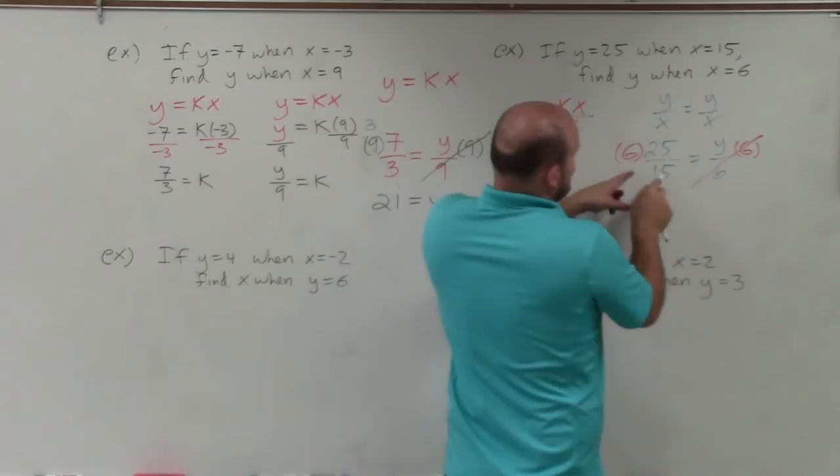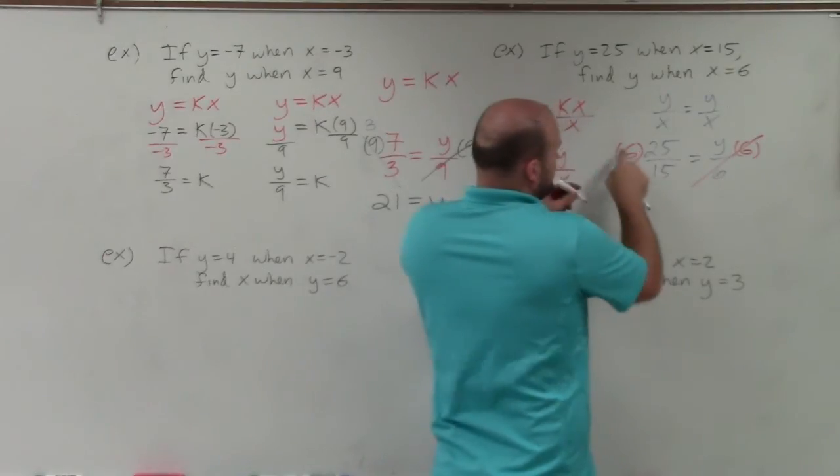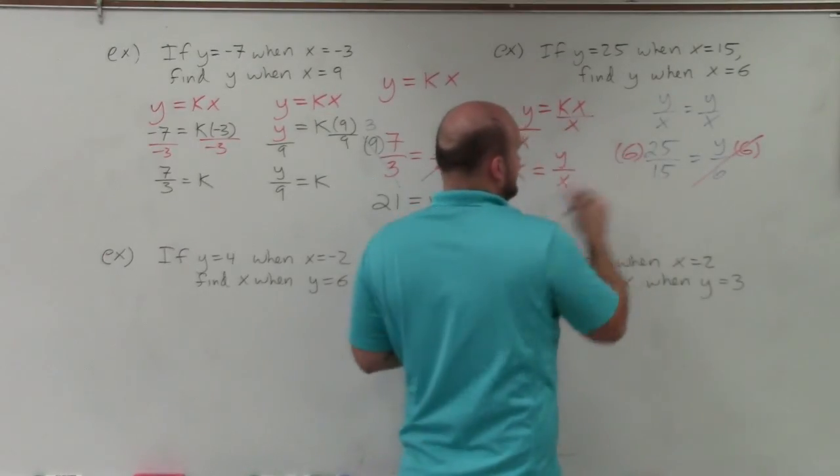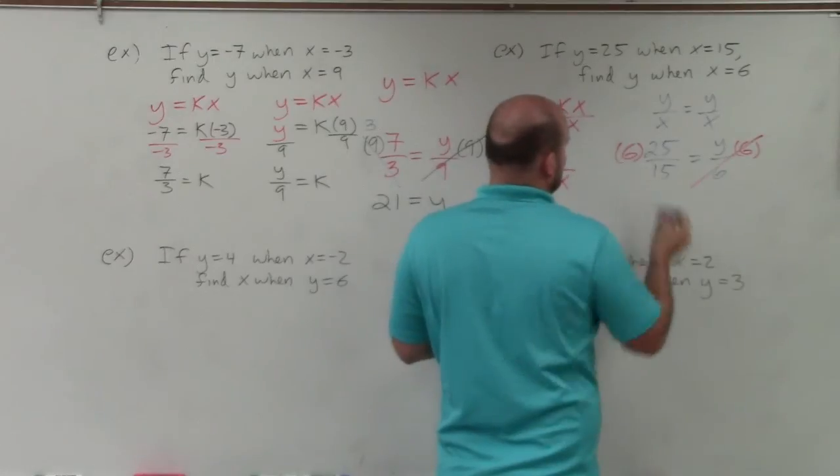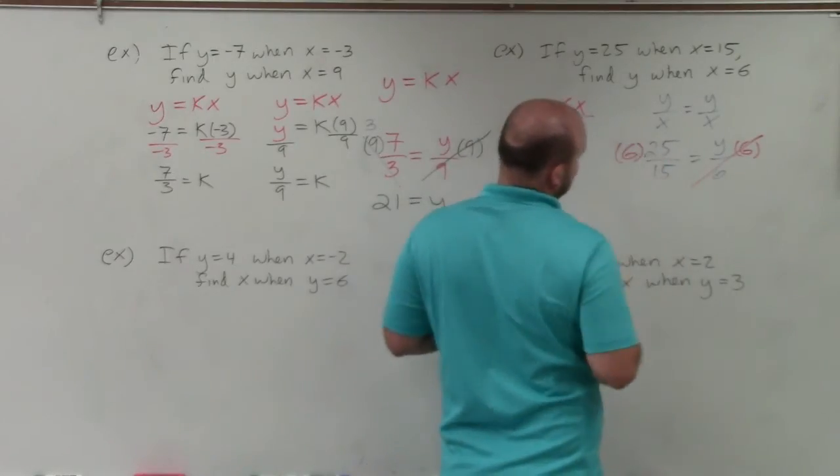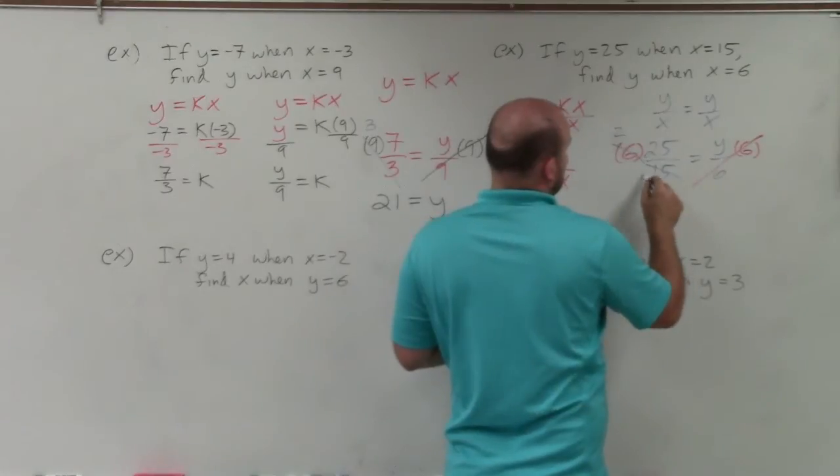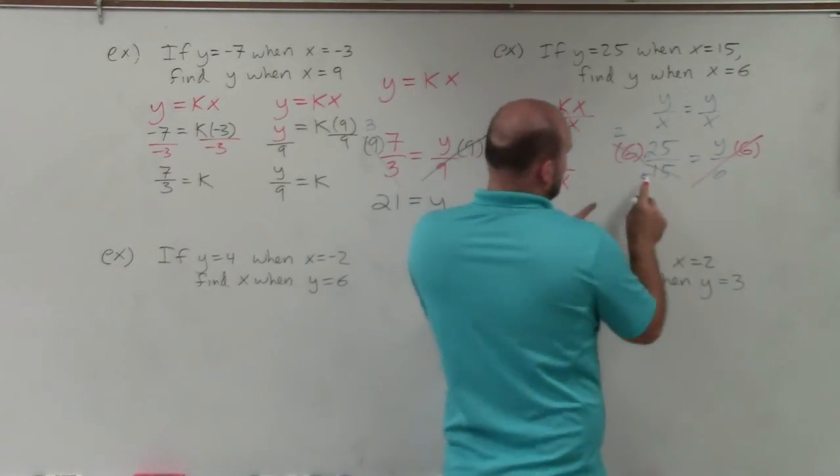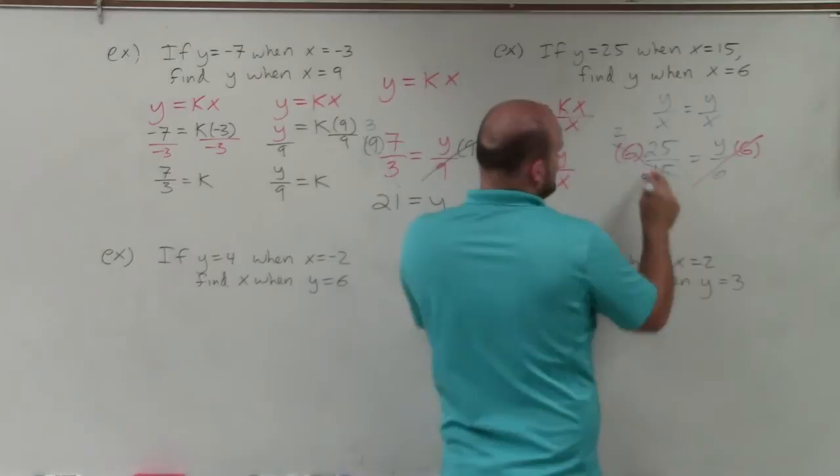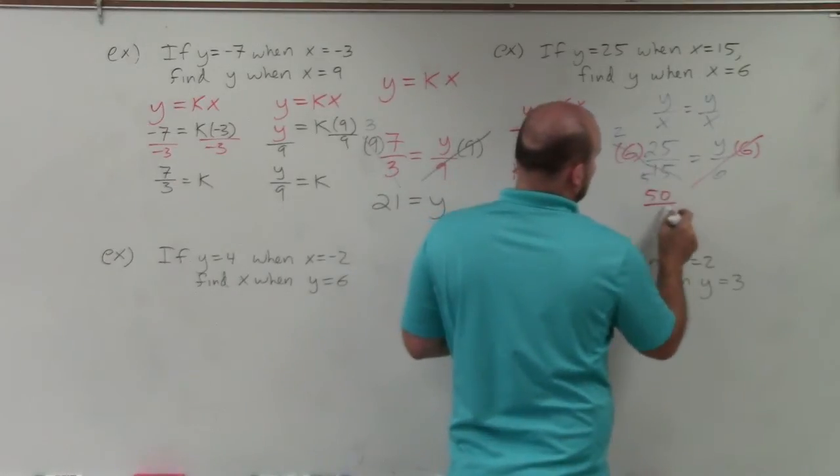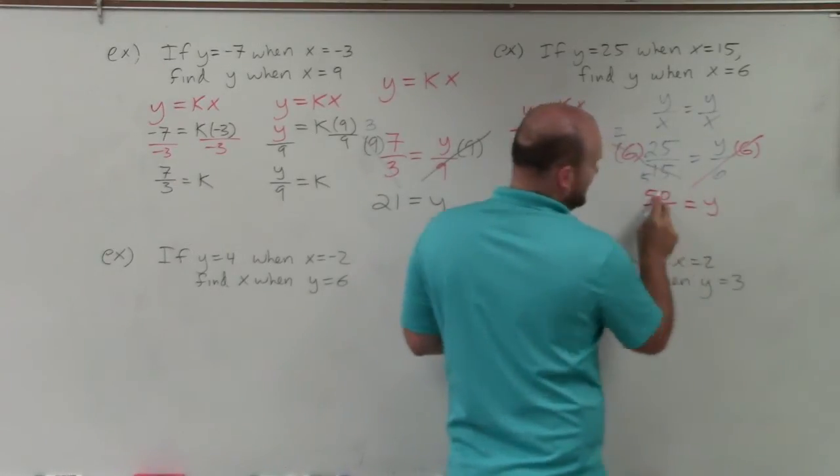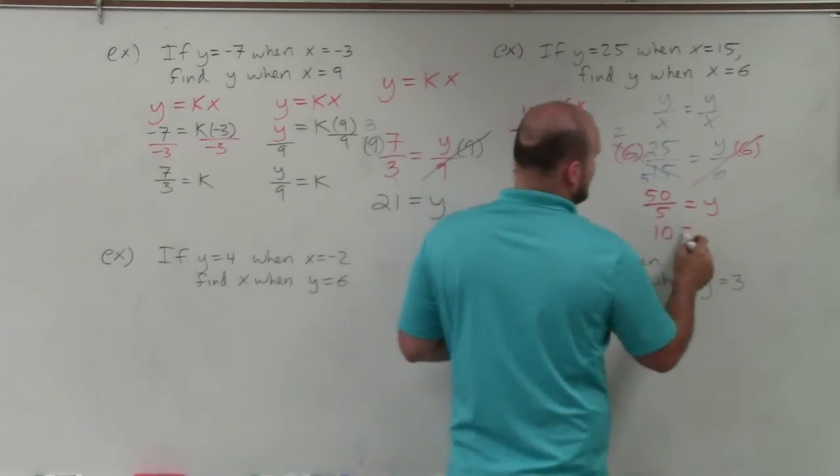You can divide the top and bottom by 3. Therefore, you'll be left with 2, and that would be a 5. Then you have 2 times 25 is 50 divided by 5 equals y, which reduces to 10 equals y.